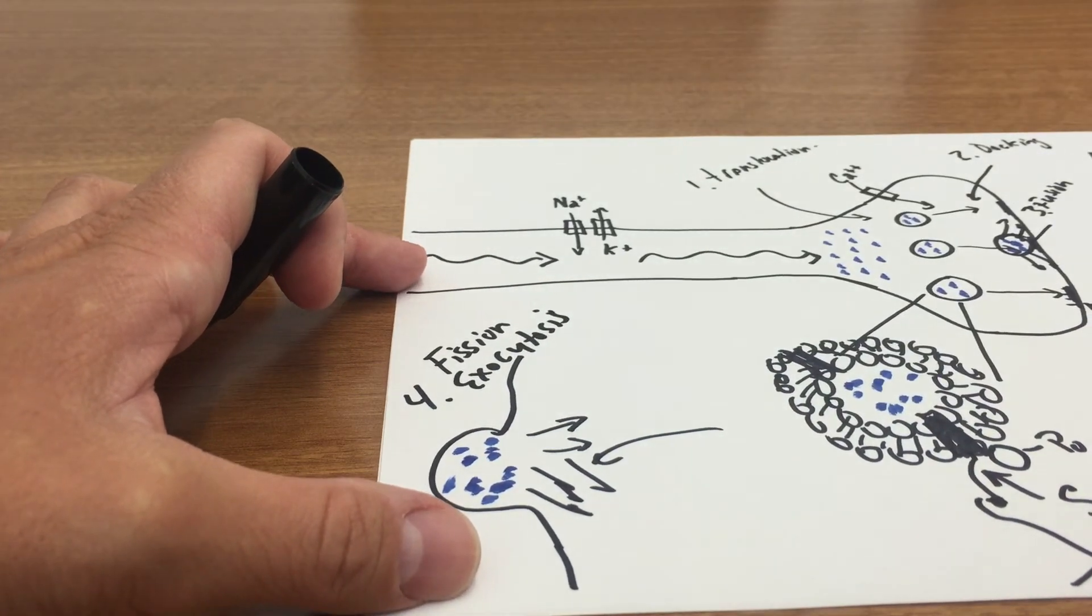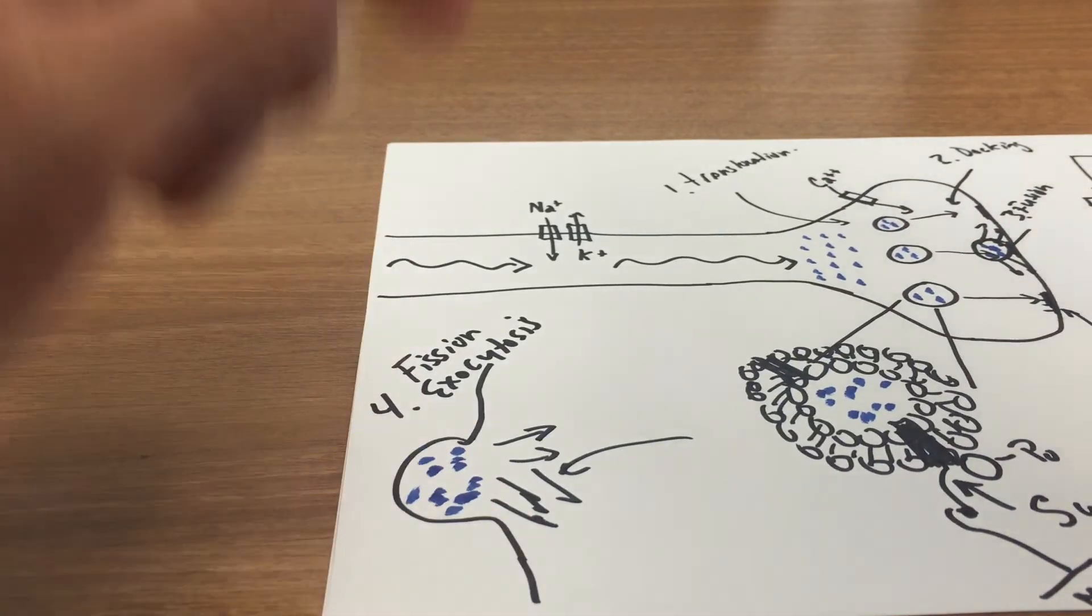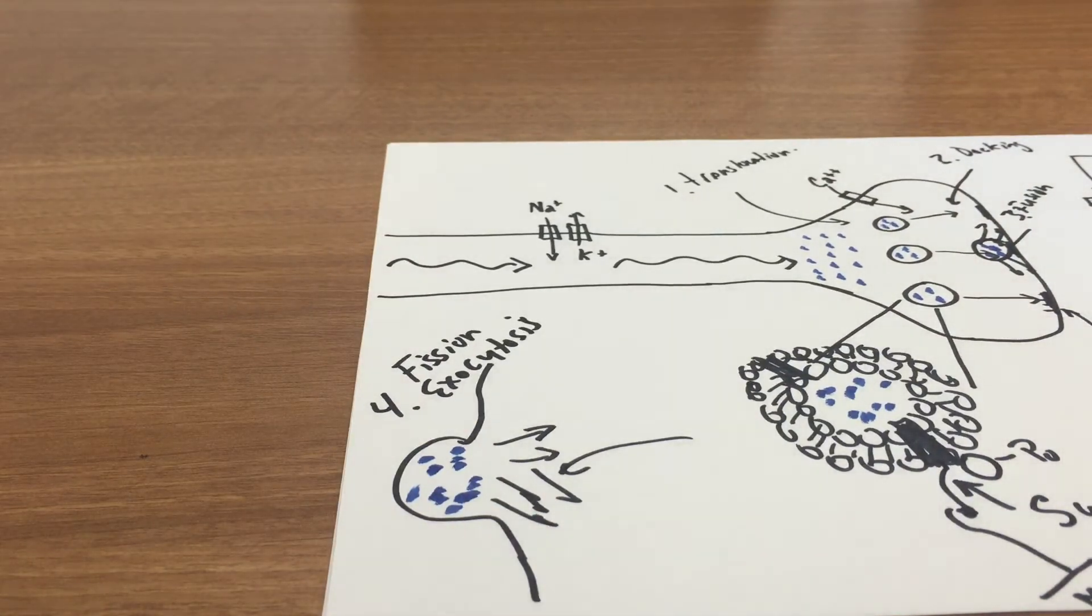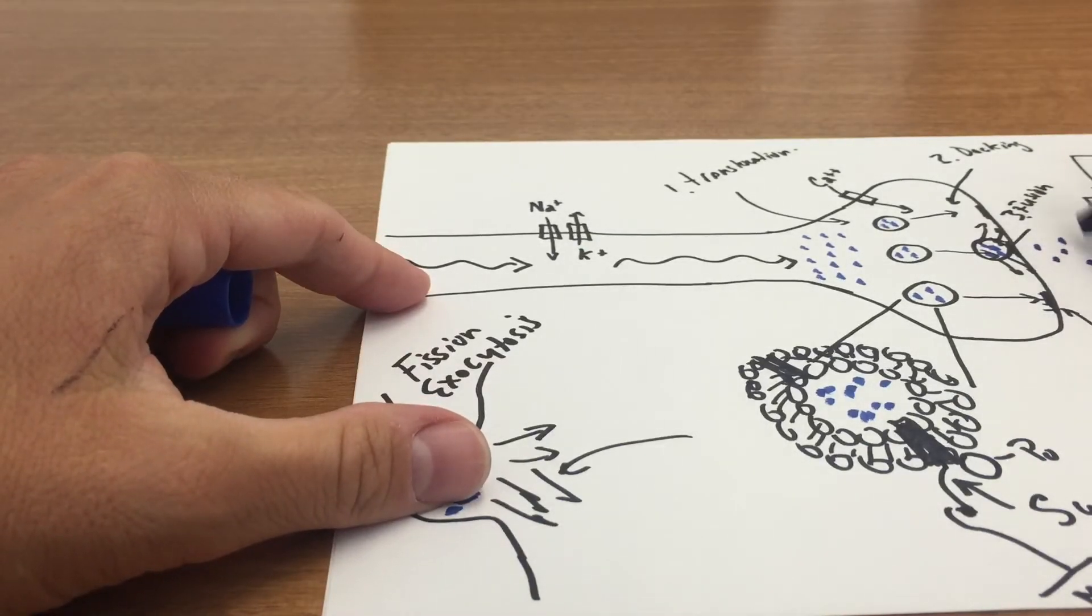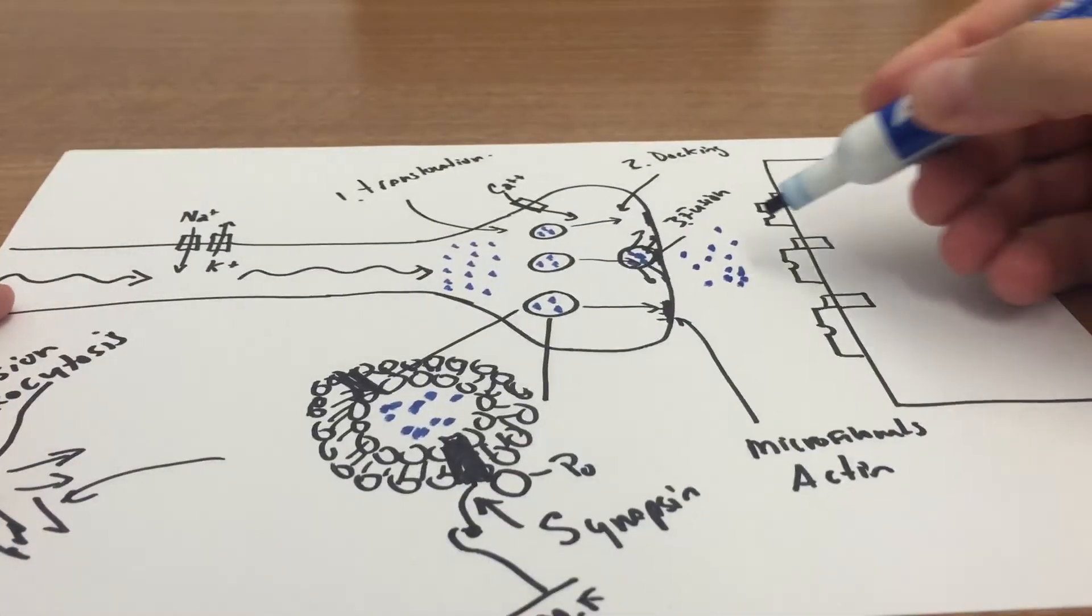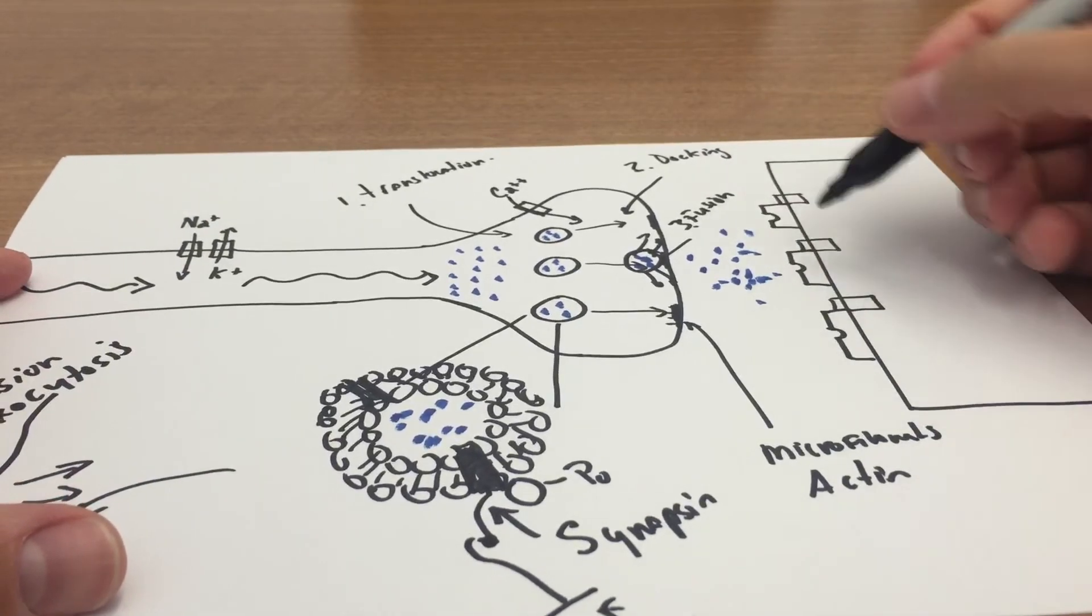Exocytosis, those molecules are released from the neuron. Once they are released, they are dumped out into the synaptic membrane. Once they're dumped out into the synapse, they then attach to the nicotinic receptors.